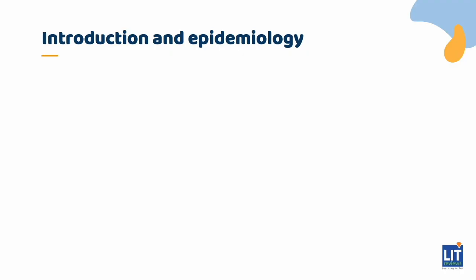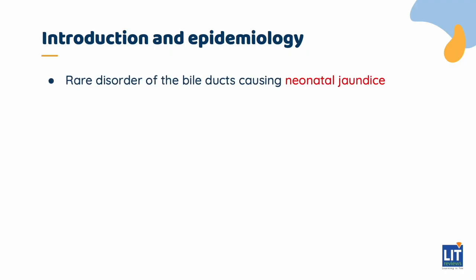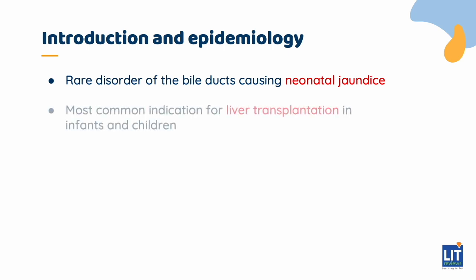Biliary atresia is a rare disorder of the biliary duct system, as both hepatic and intrahepatic ducts are affected, causing prolonged cholestatic neonatal jaundice. It can lead to liver failure and is the most common indication for liver transplantation in infants and children.